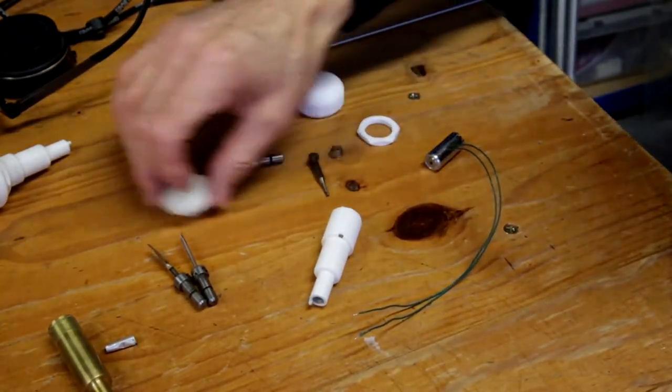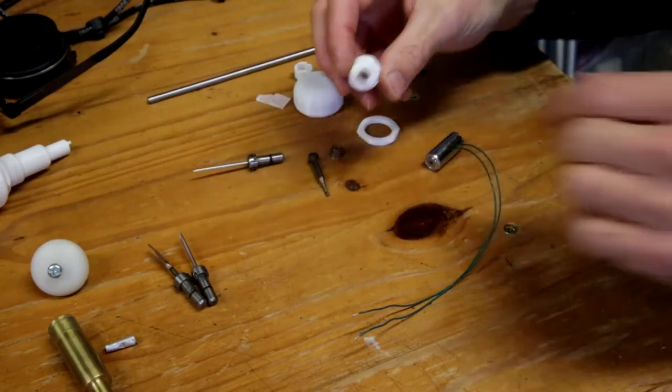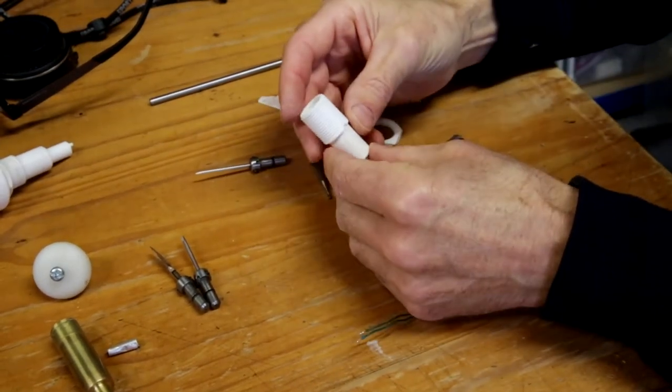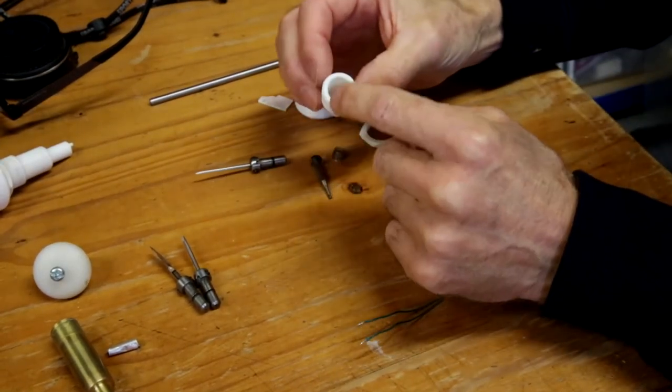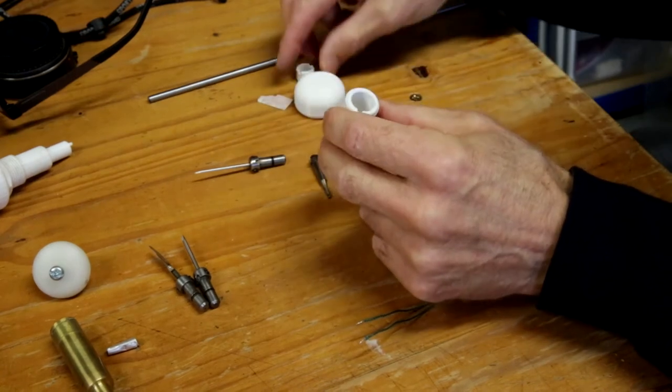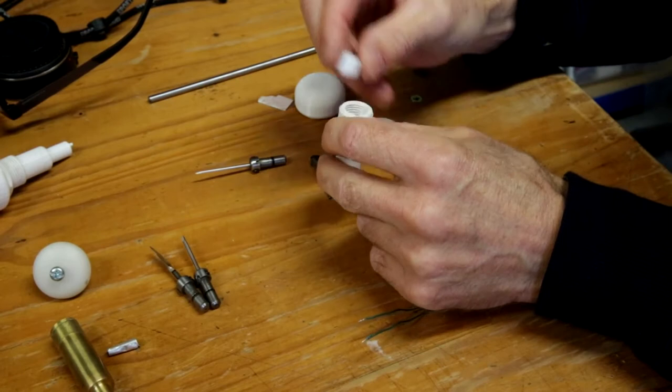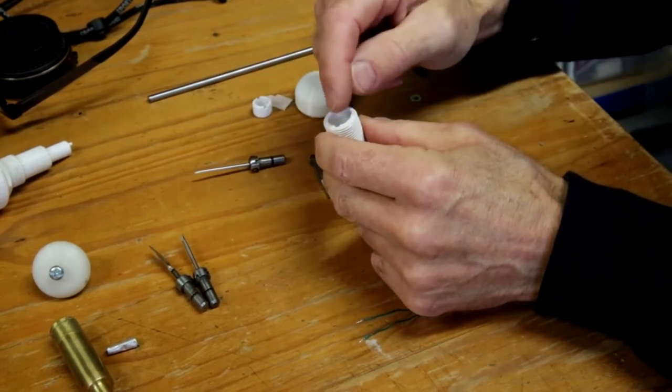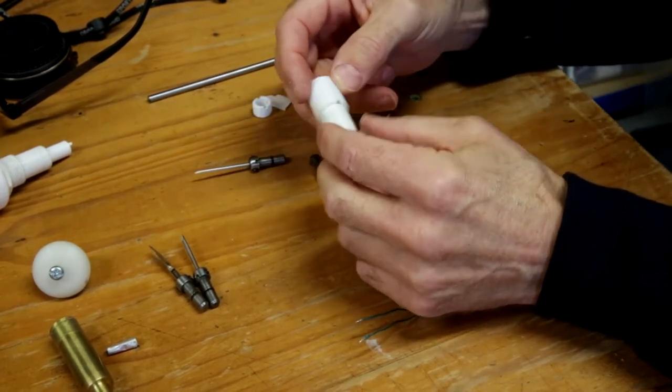So this is a 3D printed handpiece. Has a thread on the outside, a thread on the inside, probably doesn't need the thread on the inside. You could probably put a plain sleeve in there with a groove around the top and a circlip. Might make it a little bit easier.